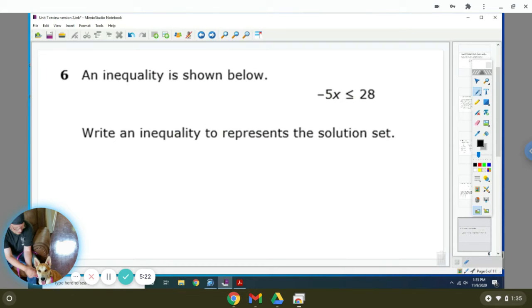Inequality is shown below. Negative 5X is less than 28. So you're going to solve it. You're going to divide negative 5 to both sides. 28 divided by negative 5 means you're going to sign. It's going to have to flip. So the X is now greater than or equal to 28 divided by negative 5, which 28 divided by 5 will go in there five times, which will be 5.6. And it will be negative 5.6.